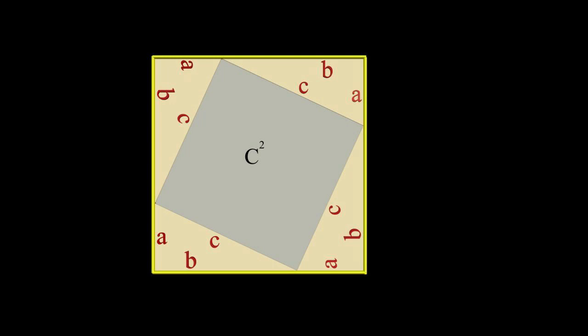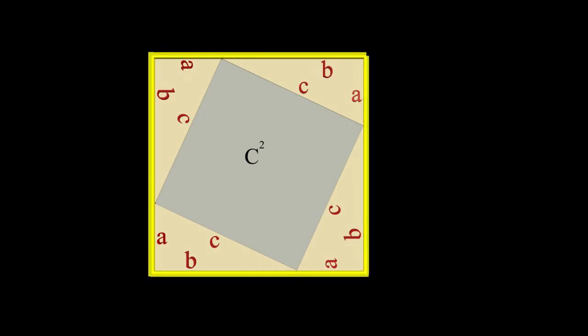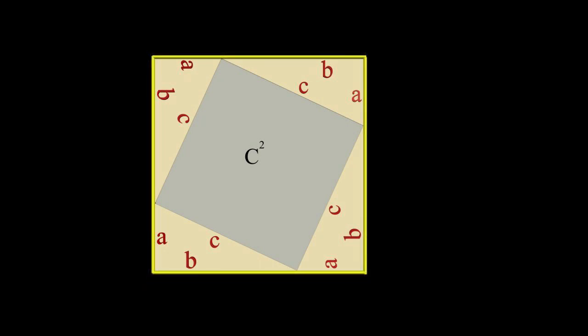It is not necessary to define the area of the larger square. Just note that it is fixed, can't be changed. Important to the proof is the fact that the area of the large square, not covered by triangles, is equal to C squared, the area of the gray square.